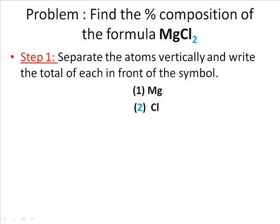Step 1. Separate the atoms vertically and write the total of each in front of the symbol. You have one Magnesium and you have two Chlorines. There's a subscript 2, you have two Chlorines.